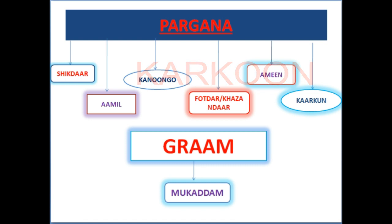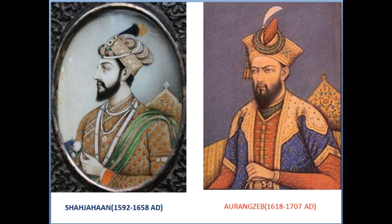In Shah Jahan's time, a Chakla type of unit was also identified by some historians. They suggest there were Chaklas positioned between the Sarkar and the Pargana levels, though the Pargana and Sarkar continued functioning as the primary administrative units.